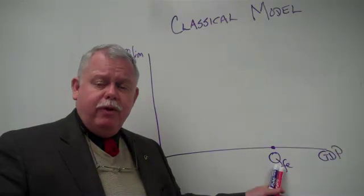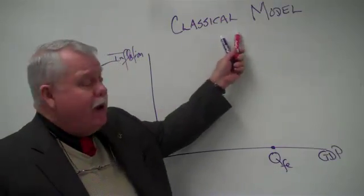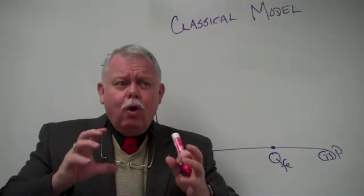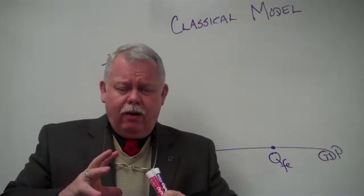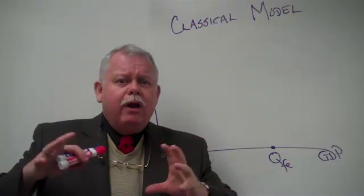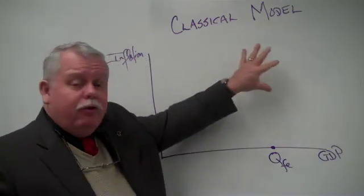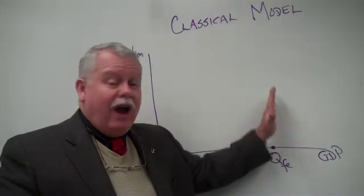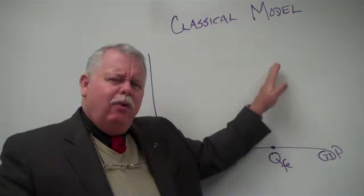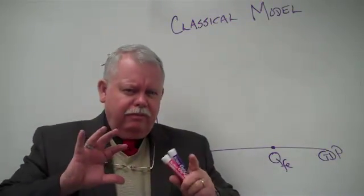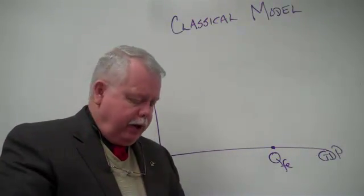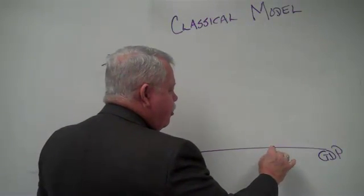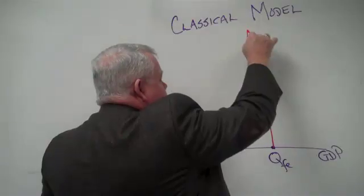And when we talk about a classical model, we're talking about a model where markets work and they work incredibly well. And because of the freedom of markets to adjust, that in this world, the economy will always be moving towards, or residing at, a full employment equilibrium. Now, bear with me. That's kind of important, but see the way we explain it. We do it by drawing the aggregate supply curve as a vertical line.